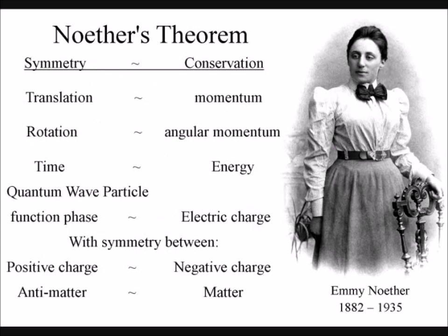And we can also use the theorem backwards as well. If we find something has been conserved, we know that there must be some underlying symmetry that caused the conservation.